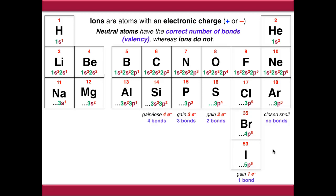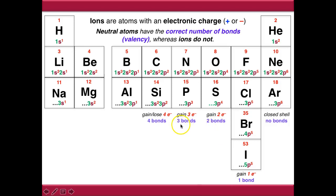Eventually we get to carbon and silicon, which would like to gain or lose four electrons. This means that while the noble gases are unreactive, halogens would like to make one bond, oxygen and sulphur would like to make two, nitrogen and phosphorus would like to make three, and carbon would like to make four.